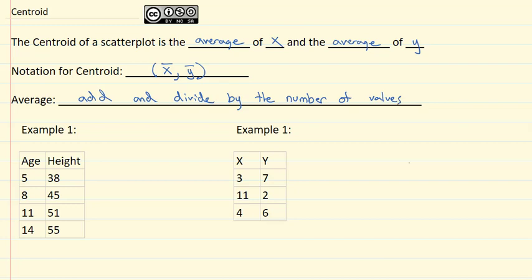So for example, here in example one, I've got a list of several age children and the height those children were at that age. We want to find the centroid of this data. To find the centroid, we first need to find the average x.